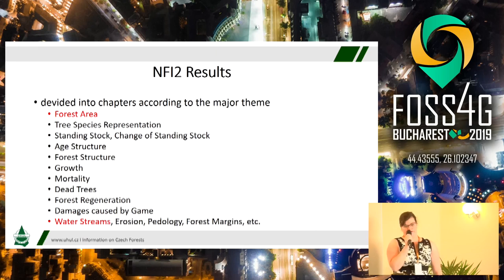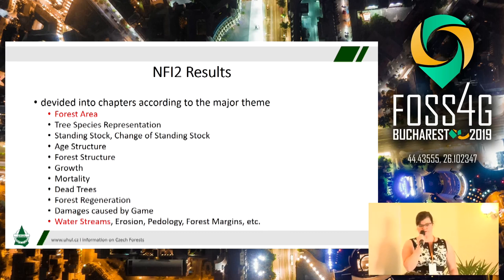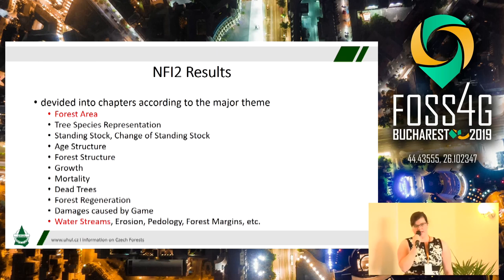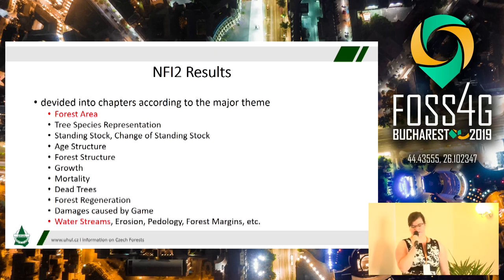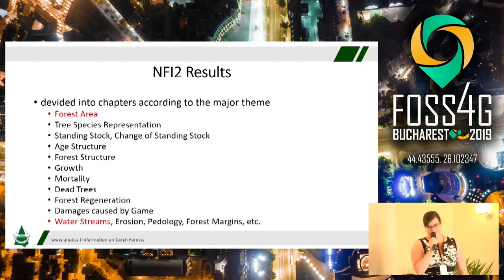Our NFI results are divided into chapters according to the measure theme. These measure themes include, for example, forest area, age structure, growth, mortality, dead trees, forest regeneration, and damages caused by game, etc. We are aimed not only at forest factors but we also study the environment and geographical environment. We included chapters such as pedology, water streams, and erosion in the forested areas. I would like to show you results from the chapter on forest area and water streams right now.